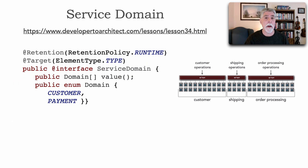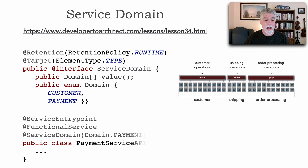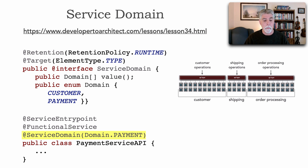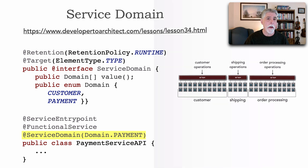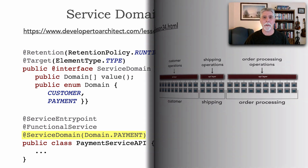With the service domain we can do the same technique of creating a single annotation or attribute called 'ServiceDomain' with a list of all the domains. Consequently, if I have a payment service API I can still specify the service domain as an enum value.